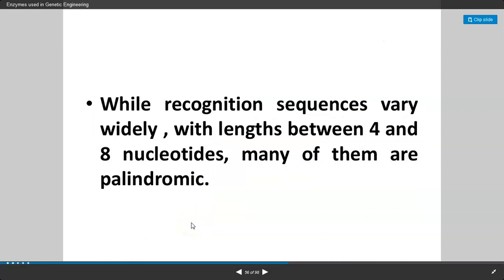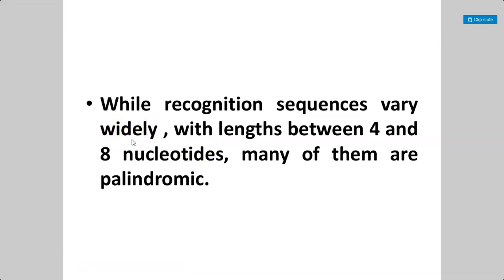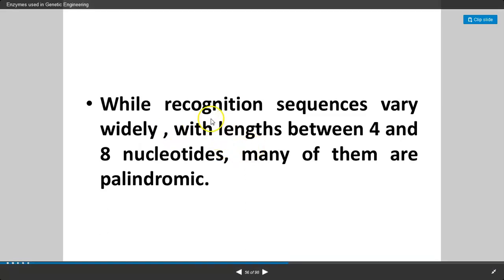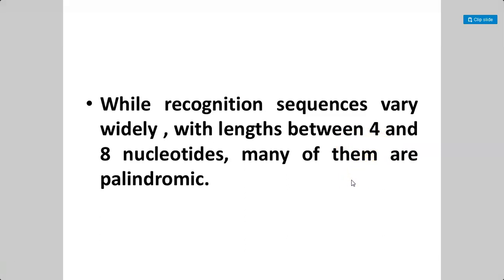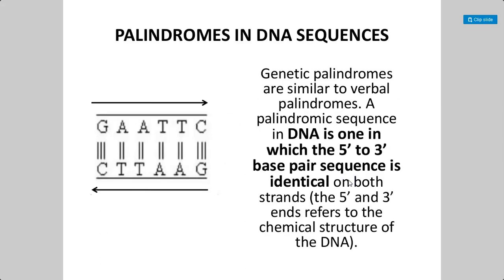What are these recognition sequences? All recognition sequences are different for different restriction enzymes, or different molecular scissors. The length of these recognition sequences is between 4 and 8 nucleotides. Many of these sequences are palindromic — we will see what is meant by palindromic sequences. It means when you read the nucleotide sequence from left to right and from right to left, it has the same meaning. These recognition sequences are different for different restriction enzymes and generally measure about 4 to 8 nucleotides.